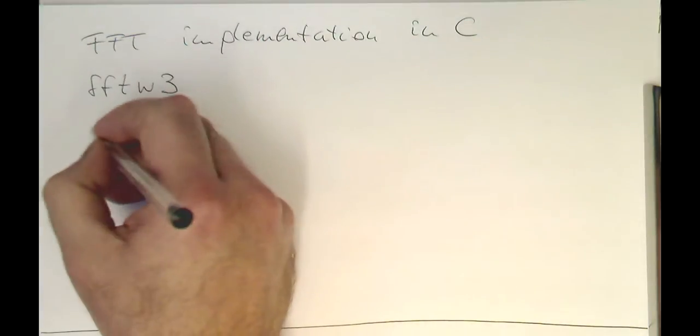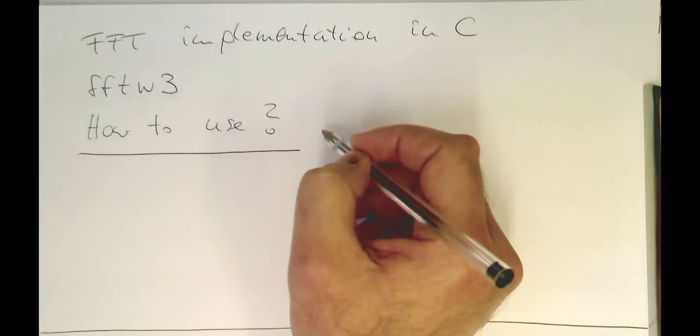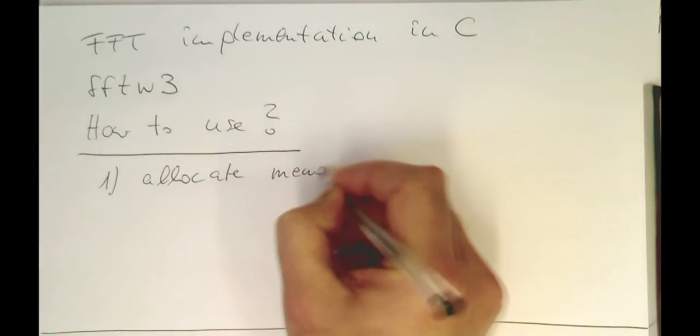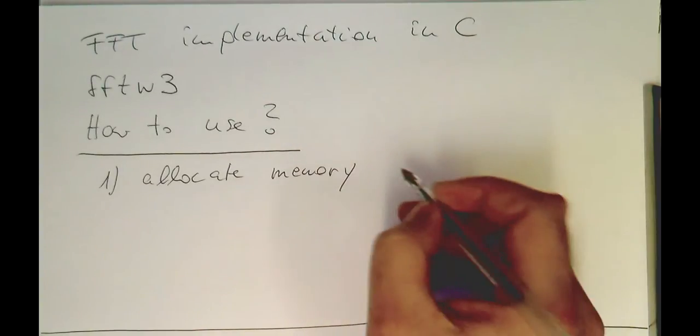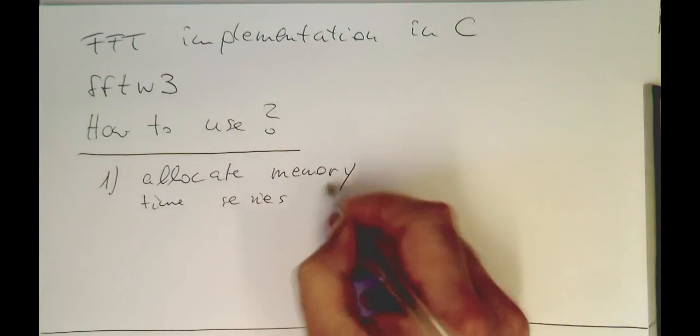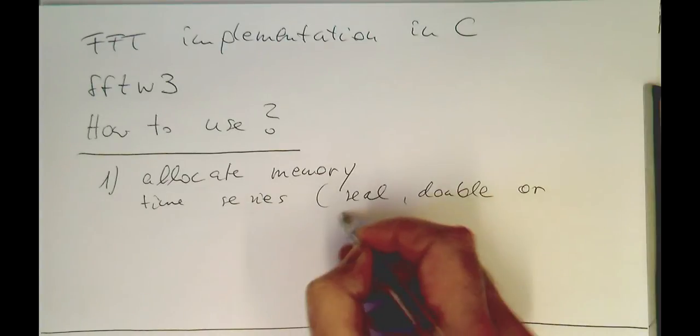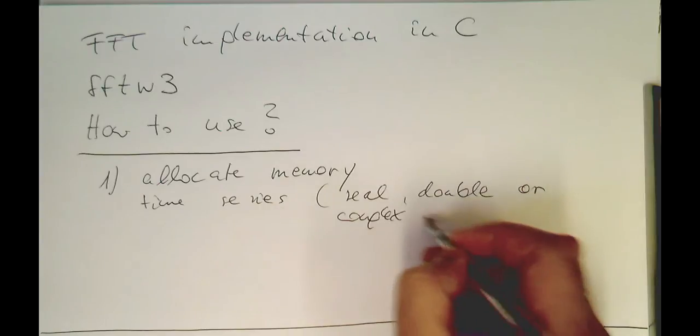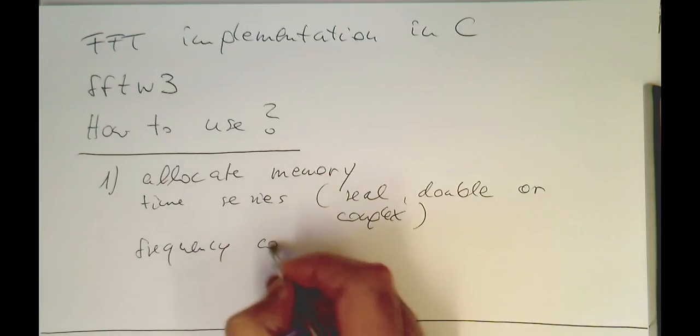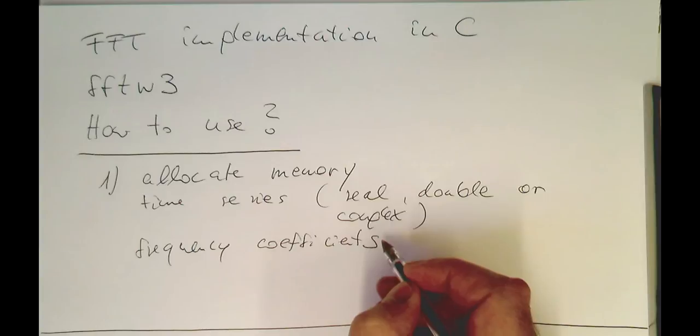So how to use? That's done in a couple of steps. First, we just allocate memory for our time series. This could be either real numbers, usually in double, or complex numbers where we just leave the complex part zero. And obviously our frequency coefficients, we are reserving space for that.